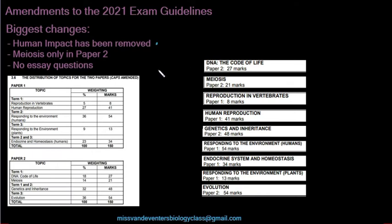The biggest changes are: human impact has been removed completely — it's covered in grade 11, so there's no need to cover it in grade 12 again. Meiosis used to be in both paper one and paper two; it is now only in paper two. And the thing most learners will be happiest about is that essay questions have been removed from both paper one and paper two — no more section C, just section A and section B.